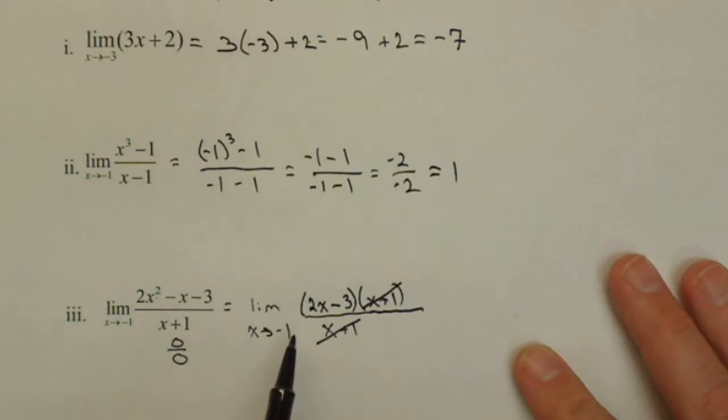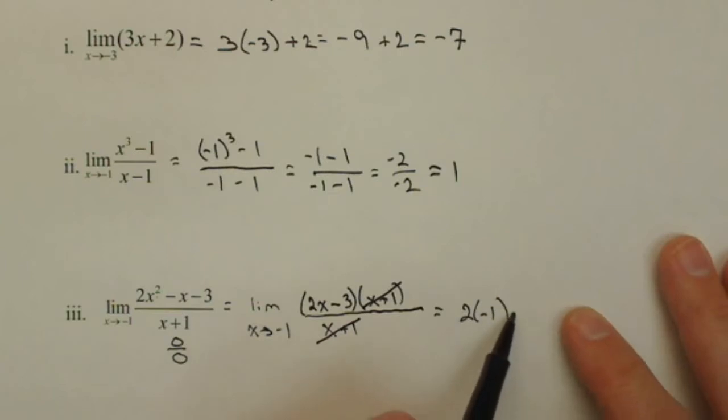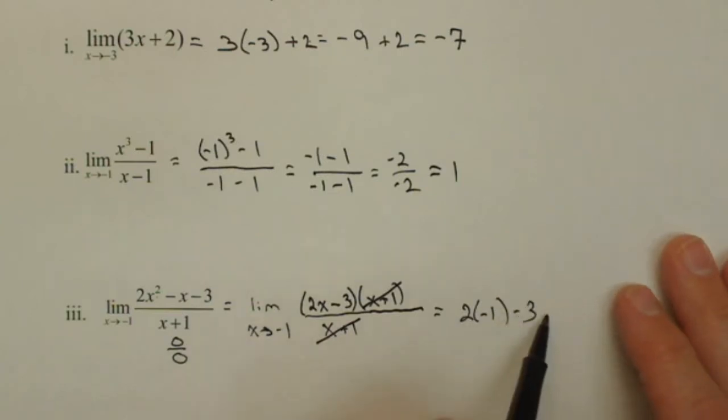Now, what we can do is we can try again to plug in the negative 1, and we get 2 times negative 1 minus 3, or negative 2 minus 3, which is negative 5.